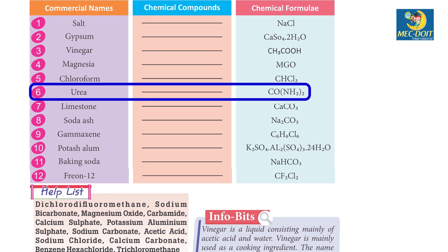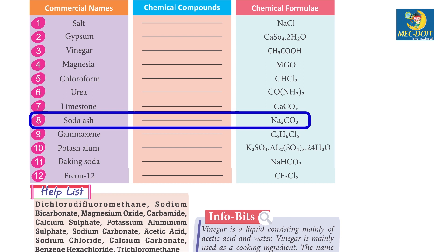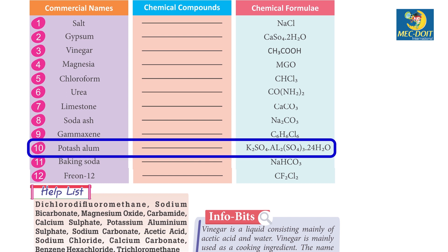7. Limestone - Calcium Carbonate. 8. Soda Ash - Sodium Carbonate. 9. Gamaxene - Benzene Hexachloride. 10. Potassium Aluminium Sulphate - K2SO4·Al2(SO4)3·24H2O.